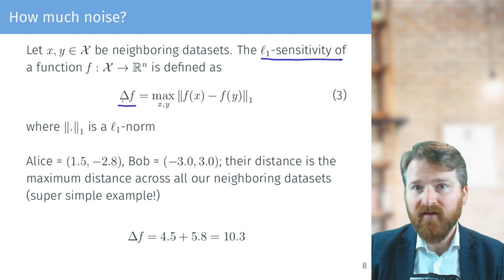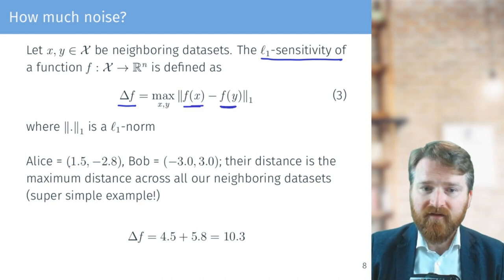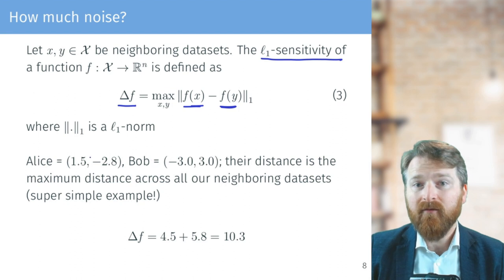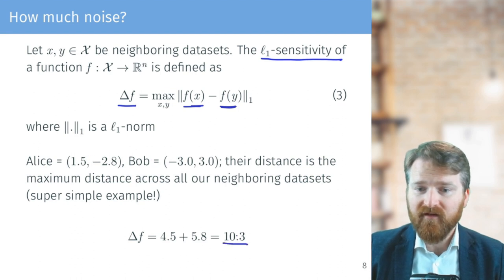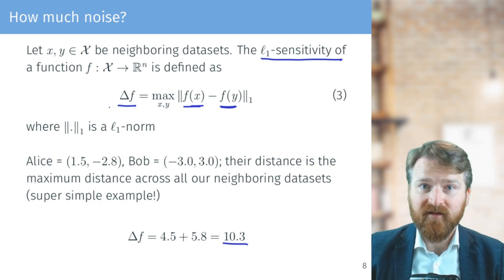So L1 sensitivity is saying basically the maximum distance of any two outputs. So if we have vectors Alice and Bob, their maximum L1 distance would be, for example, 10.3, and this would determine how much noise we have to add in order to preserve privacy and be differentially private.